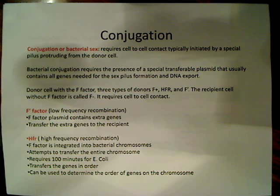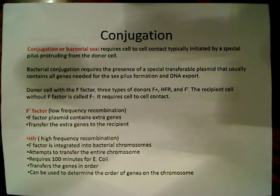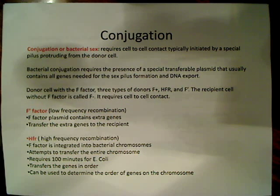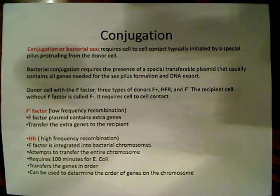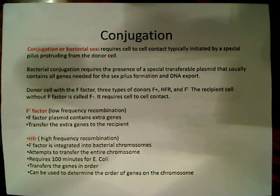When one of these cells tries to transfer its genes, it actually does so by attempting to transfer the entire chromosome. That never really happens because it requires 100 minutes for an E. coli cell to do this — a very long period of time for the cells to remain connected. So only part of the genes usually get transferred. Since the genes are transferred in order, this can be used to determine the order of genes on the chromosome as an identification technique.